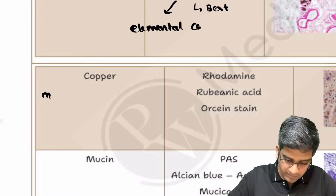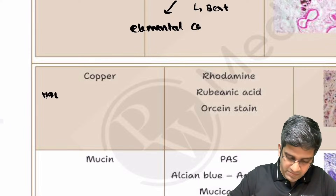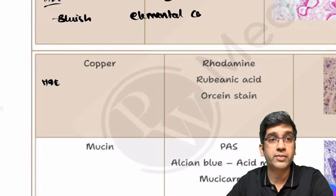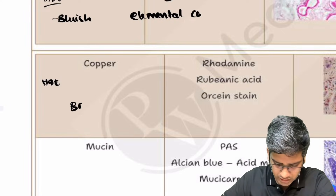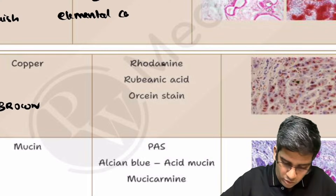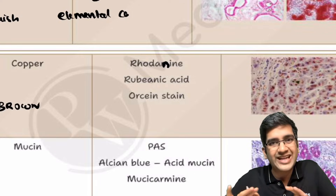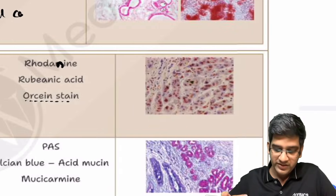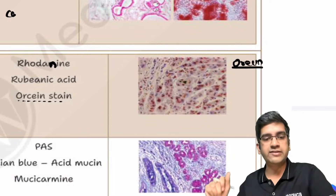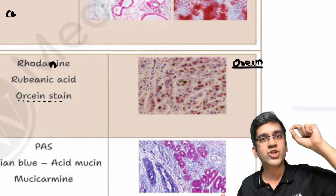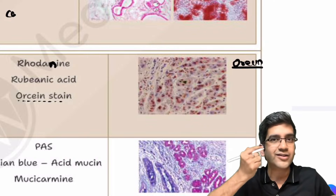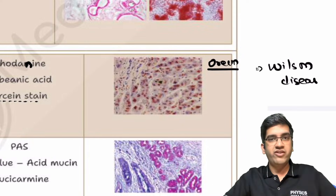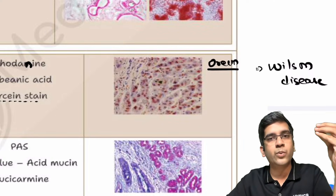For the H&E color, calcium will always have a bluish tinge. Von Kossa gives a blackish color. Alizarin Red appears red, as the name says. Next is copper — in H&E, copper appears brownish in color, like copper utensils. There are multiple copper stains: Rhodanine, Rubeanic acid, and Orcein. Orcein is diagnostically preferred. The main use case is Wilson's disease — excess copper deposits in the liver — which also presents with Kayser-Fleischer rings in the eye. This is essentially the only significant use case for copper staining in diagnostic pathology.